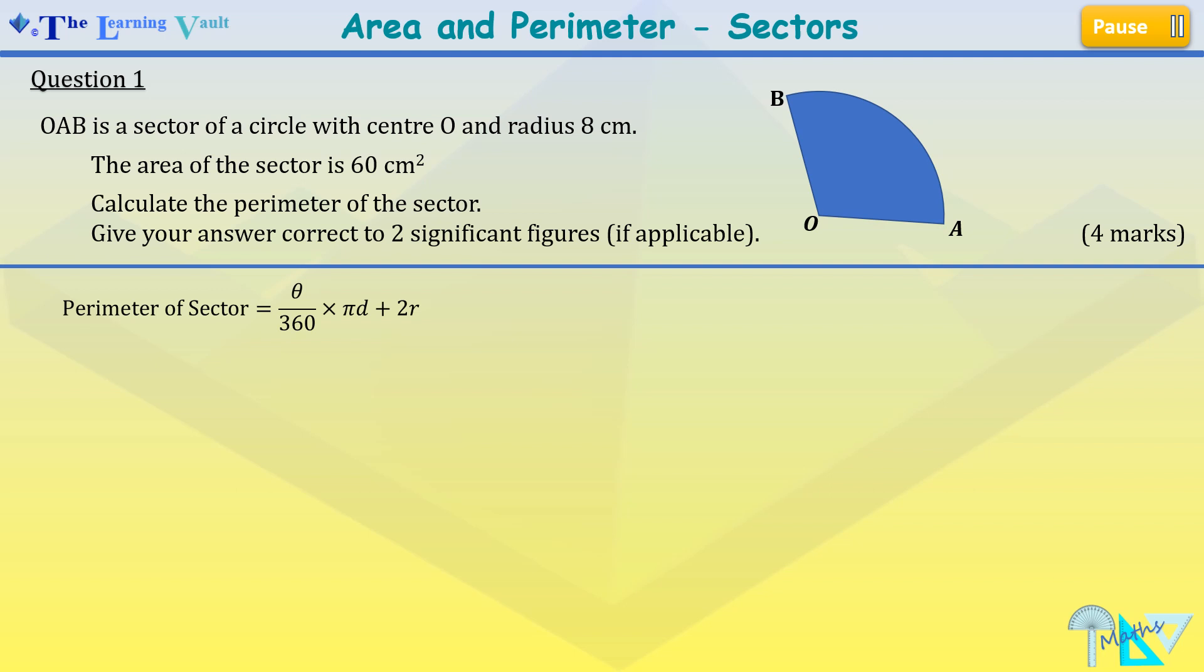Now we've been told to find the perimeter of this sector, which is theta over 360 times pi d plus 2r.